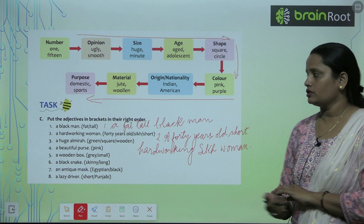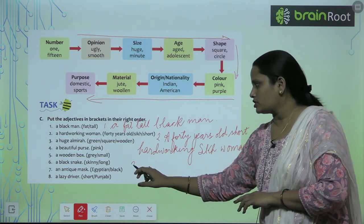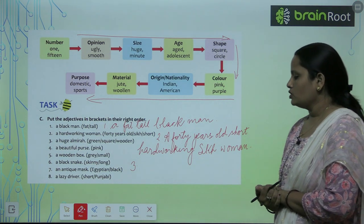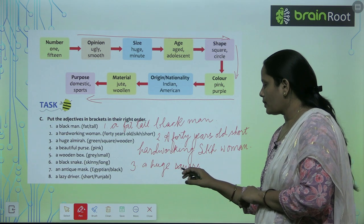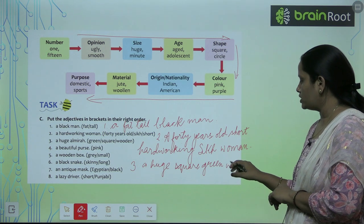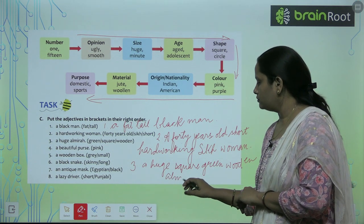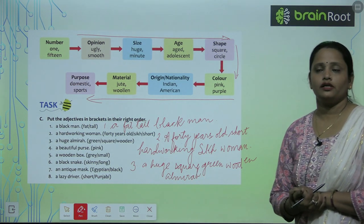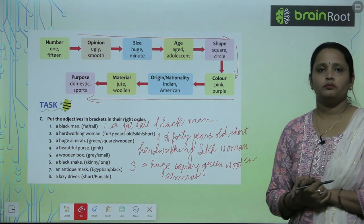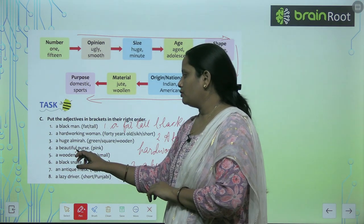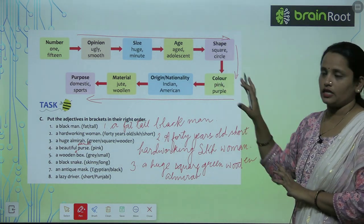The fourth one you will write as 'a beautiful pink purse.' So children, I hope you have understood — you have to see this table and accordingly complete the exercise. You have to complete question numbers 5 to 8 on your own.